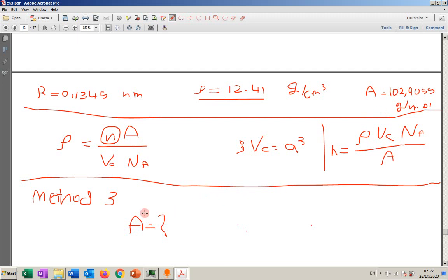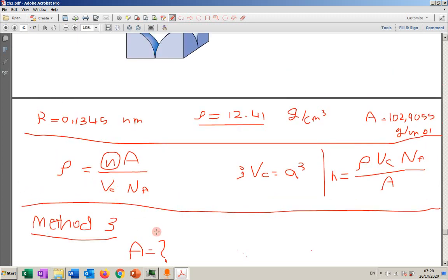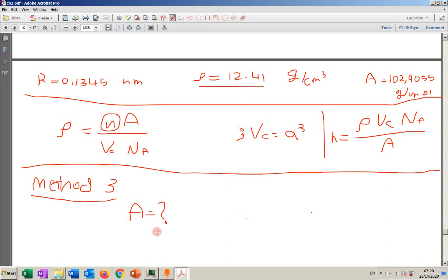You're gonna assume it's BCC or FCC again, it's still assumption. You assume it's BCC, you find the atomic weight, then you compare to the atomic weight that you have. Now the three methods that I explained, all of them are based on assumption. So do we have another thing that we can use without assumption? That's the fourth one, but it requires some pre-knowledge.